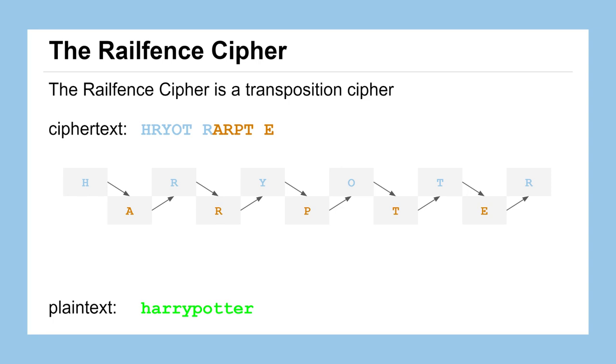How would this work for a three row railfence? Well it'd be pretty similar. We take the total number of letters, the fact that we know it's a three row railfence will help us set up our kind of skeleton here or our scaffolding. And we can see we'll have three letters that go in the top row, five in the middle, and three in the bottom. And following the zigzag pattern we can reconstruct our plaintext message of Taylor Swift.